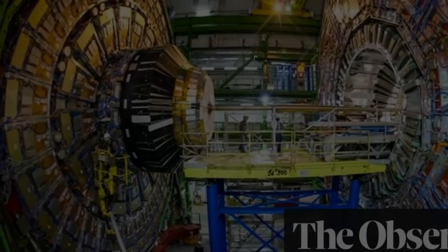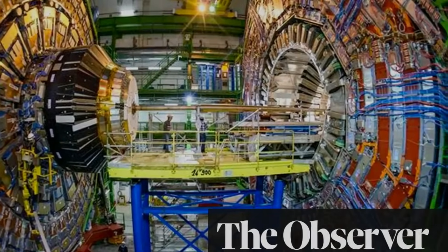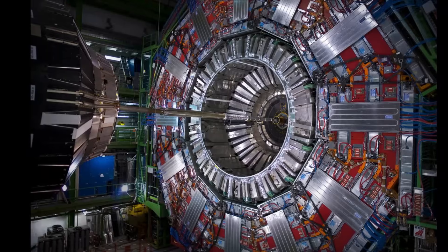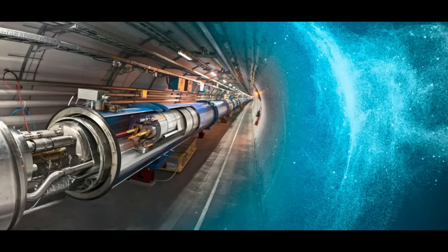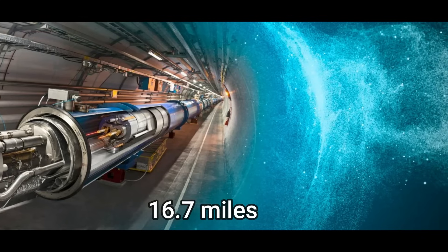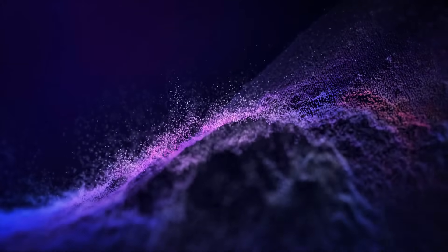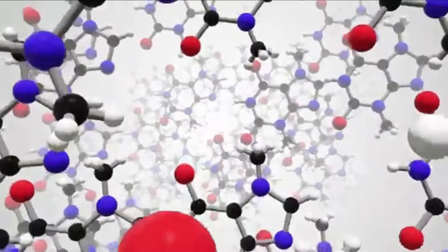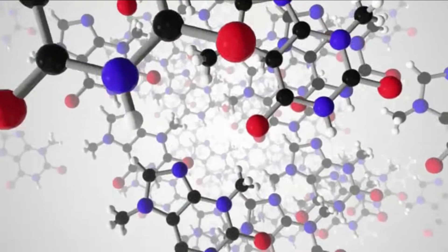The L in LHC, which stands for large, hardly does justice to its colossal scale. This mammoth accelerator has a circular tunnel spanning approximately 16.7 miles. The middle letter, H, signifies hadron, a term encompassing composite particles like protons formed from smaller building blocks known as quarks.